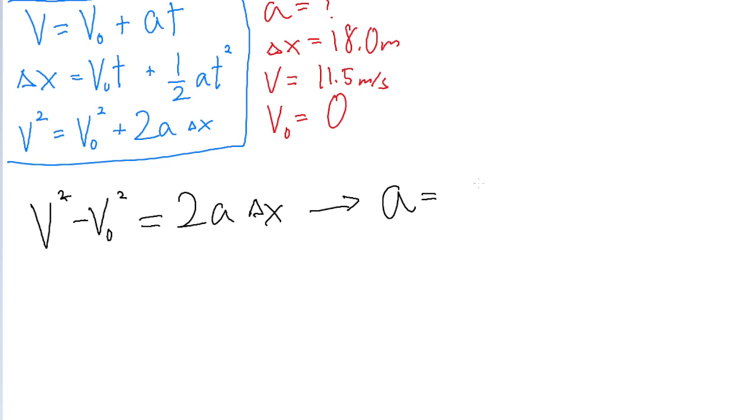So a equals v squared minus v naught squared, divided by 2 multiplied by delta x. So now we've just got to plug in what we're given.